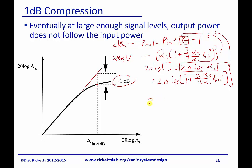And so I can simply set then 20 log of 1 plus 3 quarters alpha_3 over alpha_1 times A_in squared equals minus 1. And so let's just take that out. I'm going to end up with 1 plus 3 quarters alpha_3